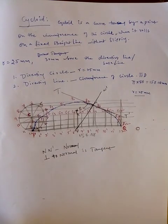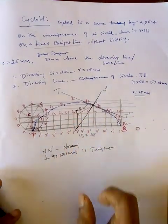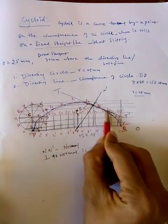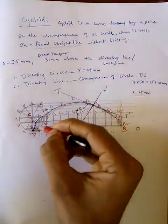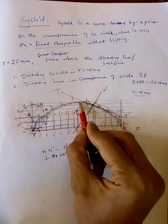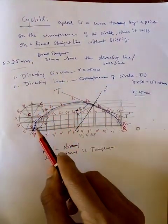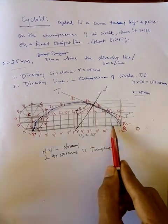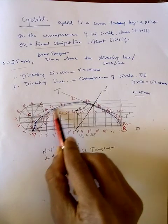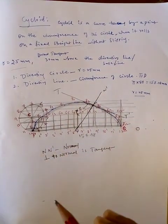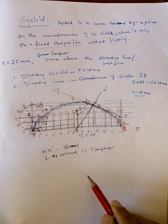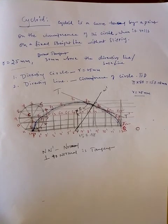When drawing with pencils, draw the cycloid curve itself with an HB pencil so it is highlighted as the answer. All construction lines — the circle, directing line, horizontal and vertical helpers — should be drawn with H or 2H pencil. Whatever is asked in the question should be highlighted; the rest are helping lines. Thank you, keep practicing.